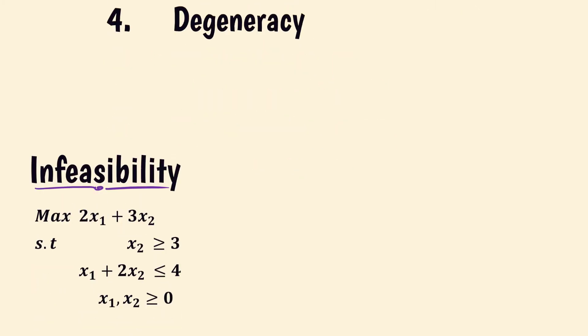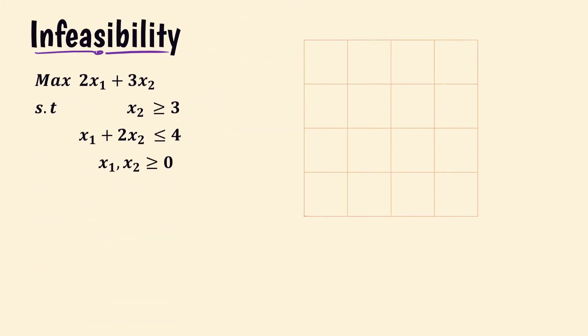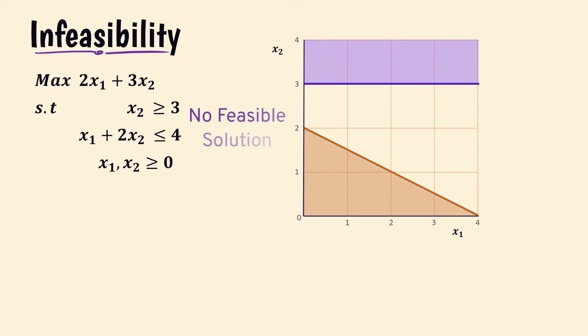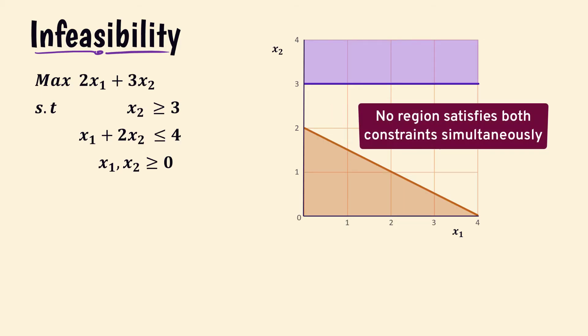Let's begin with infeasibility, which essentially means there is no feasible solution. As seen in the graph for this model, there is no region satisfying both constraints.